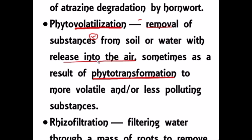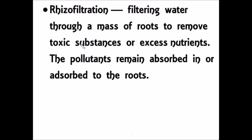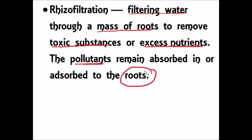Next is rhizofiltration. When pollutants or substances are mixed in water, plants filter the water through their mass of roots to remove toxic substances or excessive nutrients. The absorbed pollutants remain in the root. The pollutants are removed from the soil or water and attached to the root. This kind of removal is called rhizofiltration — meaning filtration occurring in the roots.